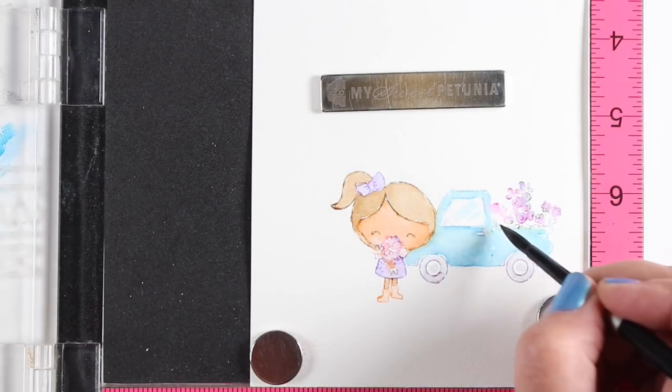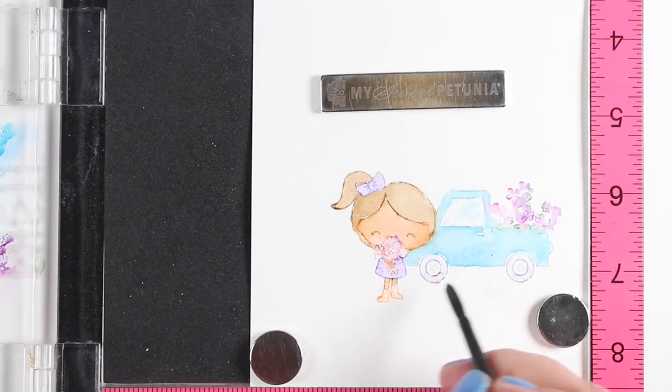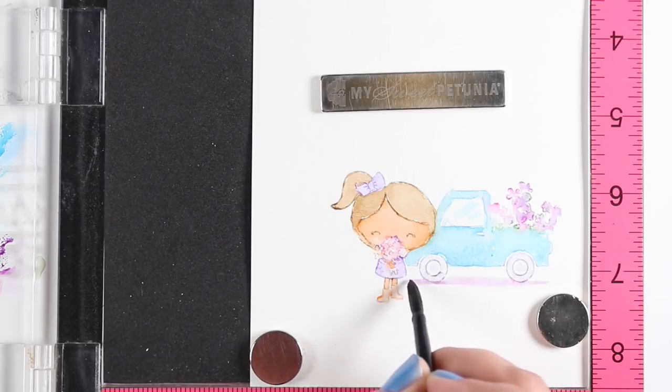And if the whole thing goes completely south and you're like, okay, now I've totally lost all my lines, everything looks terrible, then stamp it in black when you're done. And then you'll just have this wonderful underpainting and you can just stamp in black on top.